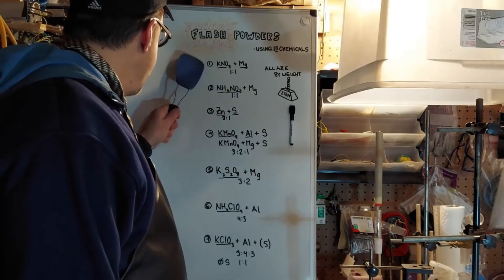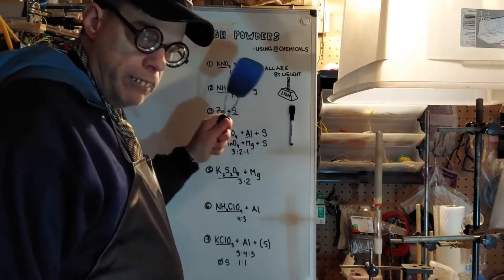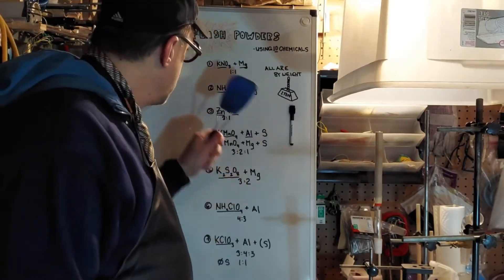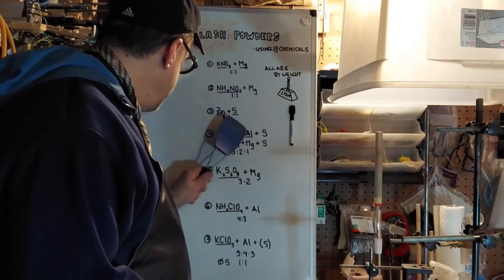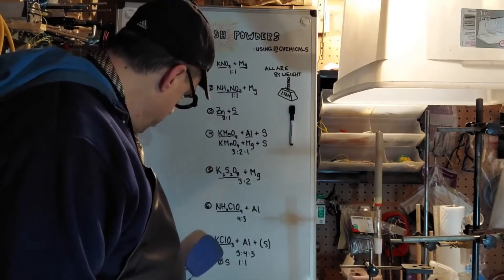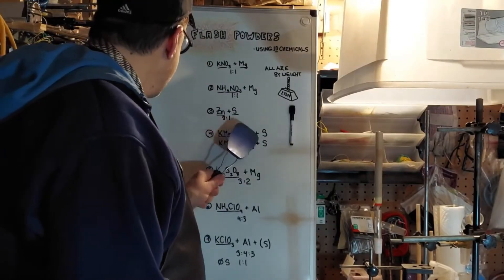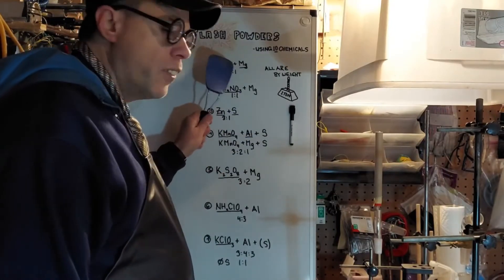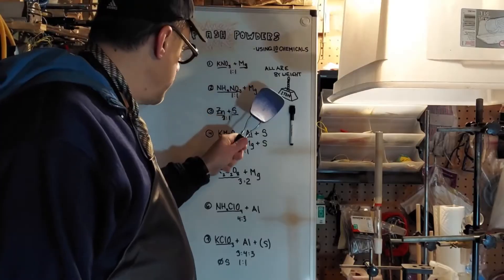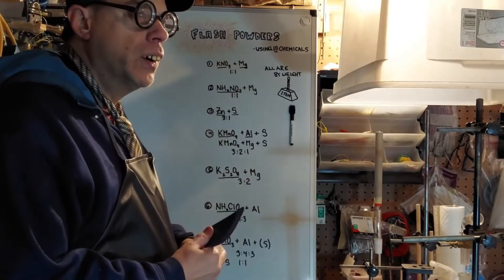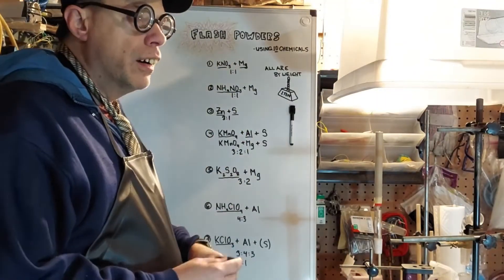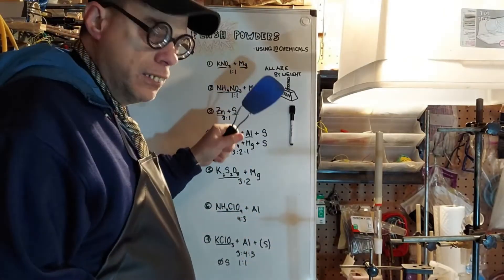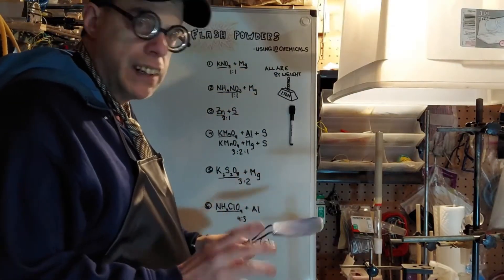We've got number one, potassium nitrate and magnesium. Them two of them chemicals. I'll underline each one of them chemicals so you need to look at them. These are the ten different types we've got right here. Potassium nitrate, magnesium, one to one ratio. These are all by weight. I do that little funny thing right there to remind you. This is not by volume, this is not by ounces liquid. This is by weight. We're talking grams, milligrams, that kind of stuff.